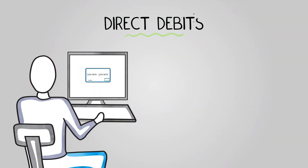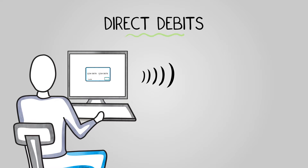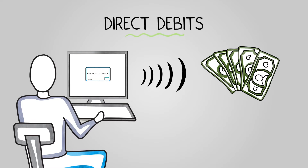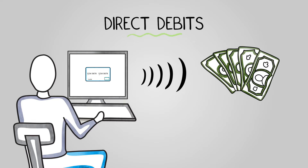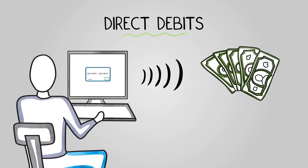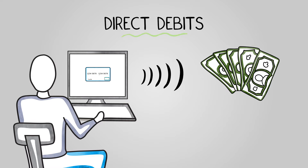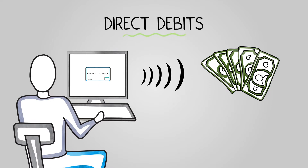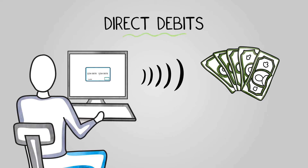Direct debit is an electronic payment method where customers authorize businesses to collect funds from their accounts. This method is commonly used for recurring payments like subscriptions and membership fees. Although it can be employed for one-time payments, direct credit bank transfer is more suitable for these types of payment.